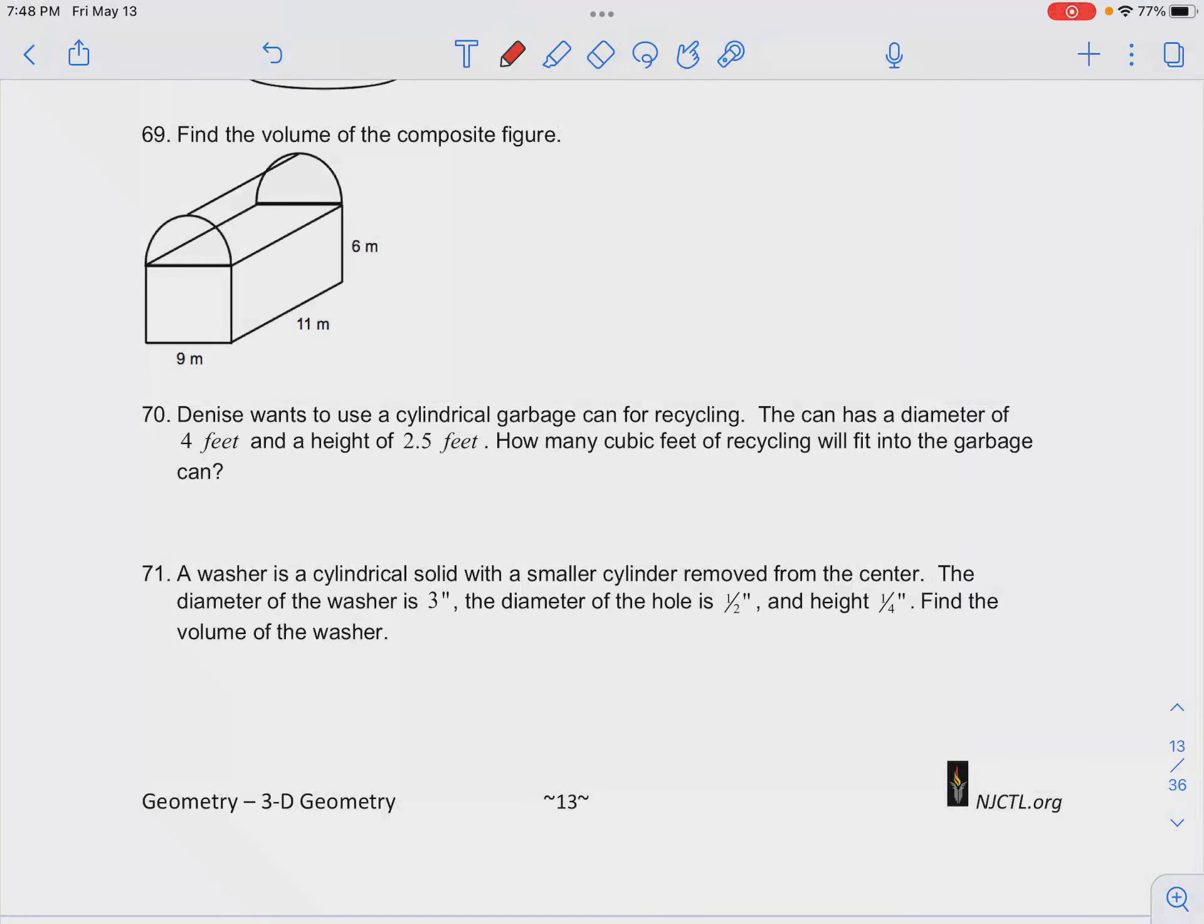Number 71 in your classwork for volume of cylinders. We're going to find the volume of a washer that has an outside diameter of 3 inches, inside diameter of 1/2 inch, and a height of a quarter inch.